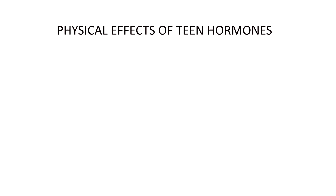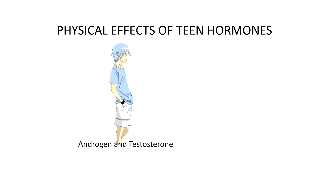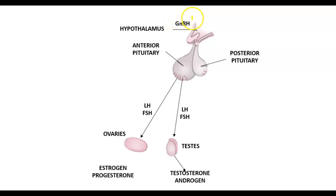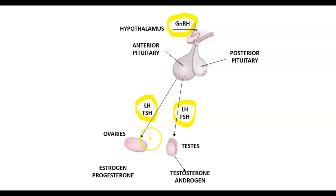We will now discuss the physical effects of these hormones — androgen and testosterone for boys, and estrogen and progesterone for girls. Without these hormones, normal physical and sexual development wouldn't be possible. At the beginning of puberty, your brain releases a hormone called gonadotrophin-releasing hormone (GnRH). The GnRH triggers the pituitary gland to secrete FSH and LH, which are then fed into your bloodstream. These hormones have different effects on males and females.